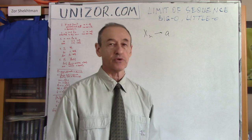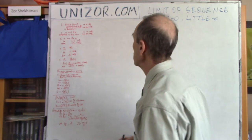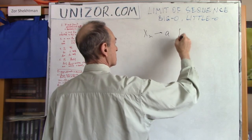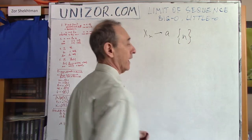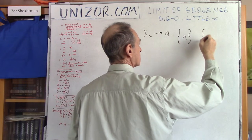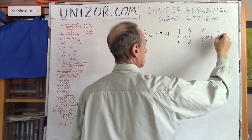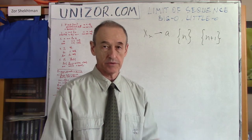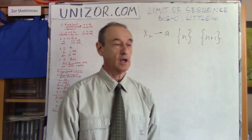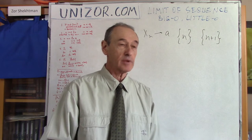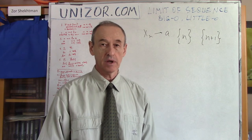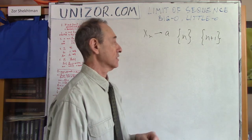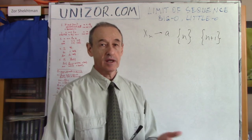Let me start with a couple of examples. Example number one: you have a sequence of n natural numbers and a sequence of n plus 1 natural numbers. Both are going to infinity as n goes to infinity. The question is which one is faster and how can we compare the speed of approaching infinity? If both are going to infinity, it's not easy to compare.